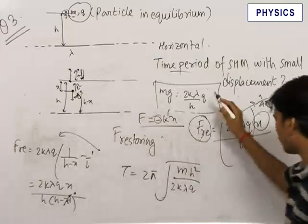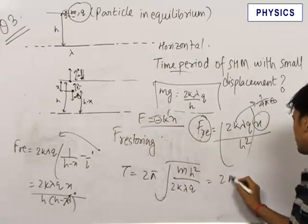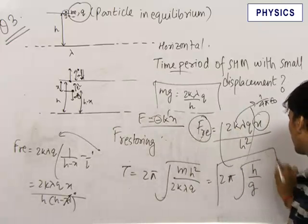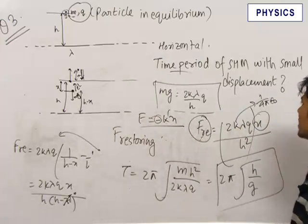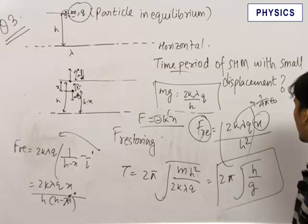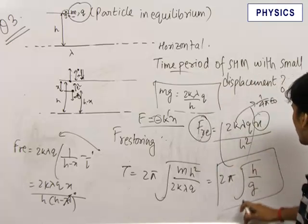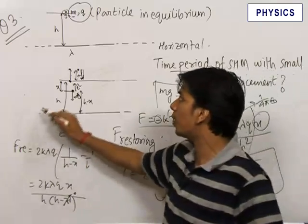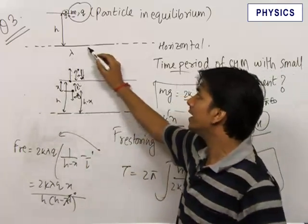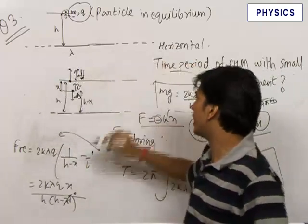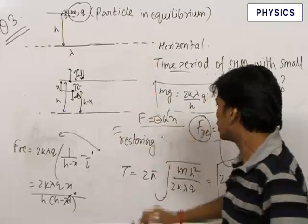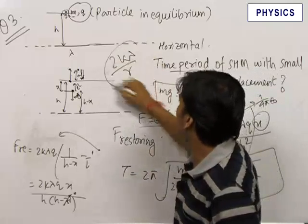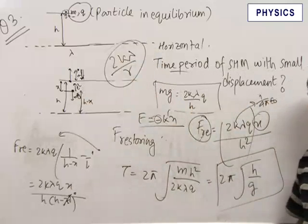Substituting the value of mg equals 2k lambda q upon h from the equilibrium condition, the time period simplifies to 2 pi root over h upon g. The key formula to remember is the electric field due to an infinite straight wire, equal to 2k lambda upon r. The final answer for the time period is 2 pi root over h upon g.